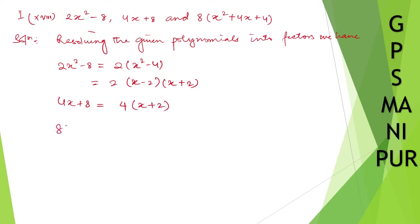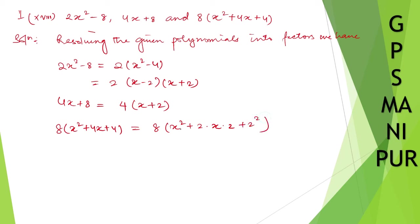Third one: 8x squared plus 4x plus 4. This follows the form a squared plus 2ab plus b squared. Here 4x corresponds to twice ab, and 4 is 2 squared, so you can write it as (2x plus 2) whole squared.